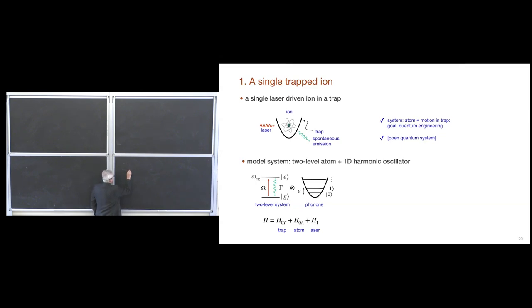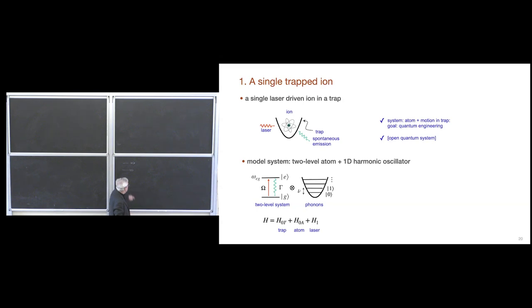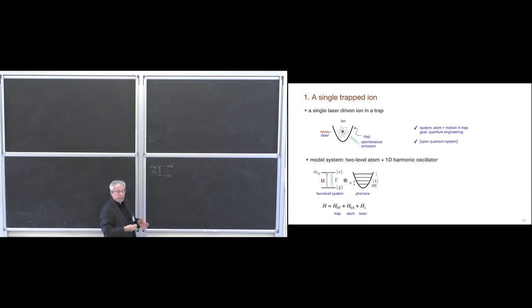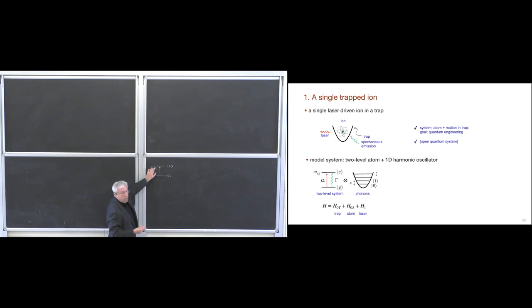For the laser-atom interaction, in the dipole approximation the Hamiltonian involves the dipole moment μ of the internal electron interacting with the classical electric field at the center-of-mass position x. We keep only two levels and apply the rotating wave approximation — keeping energy-conserving terms, valid when the Rabi frequency Ω is much less than the transition frequency ω_eg. The optical frequency ω_L is around 10^14 Hz, while the Rabi frequency Ω is typically megahertz — a large hierarchy of scales that structures our theory.